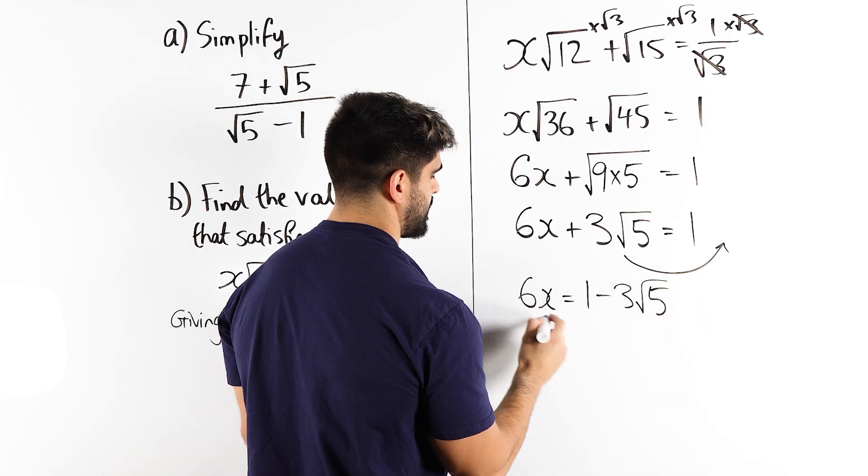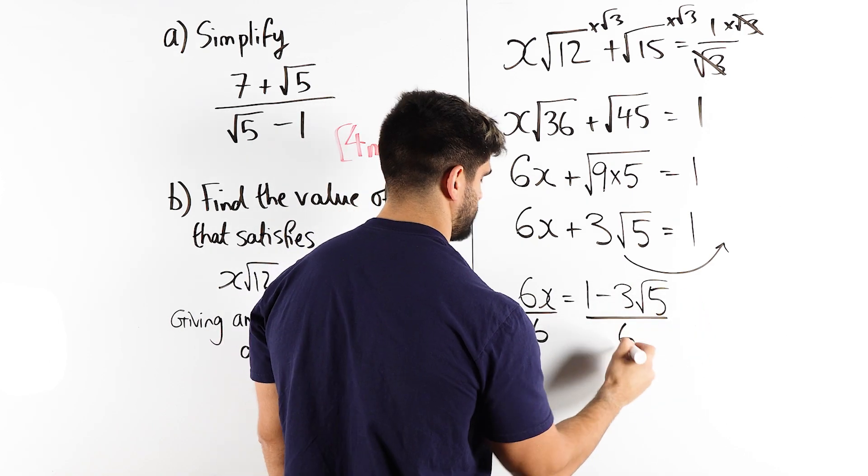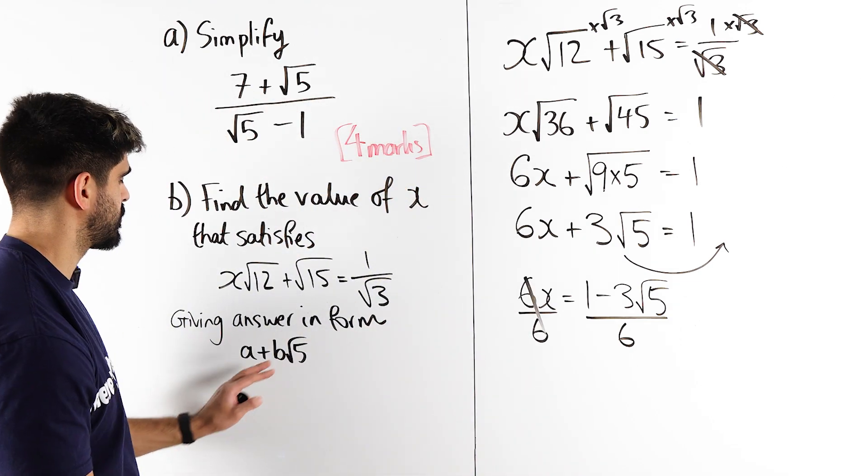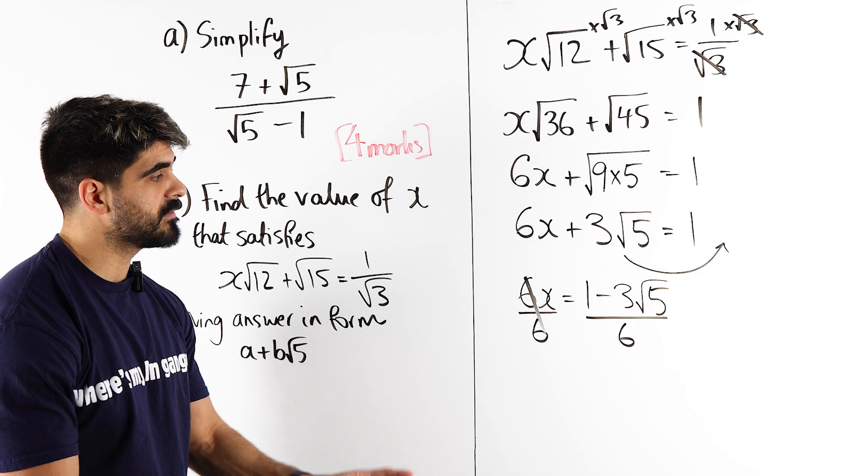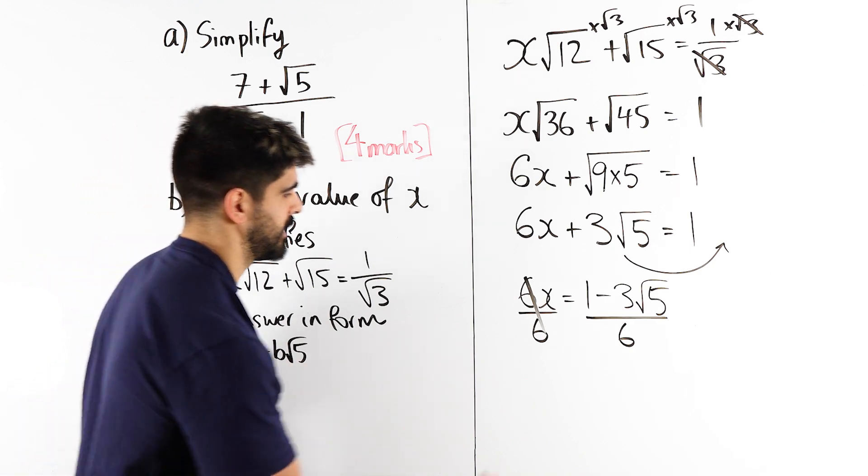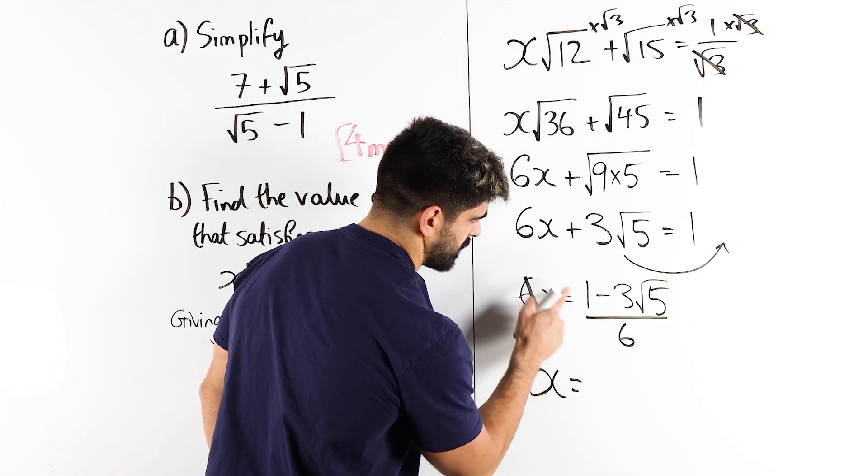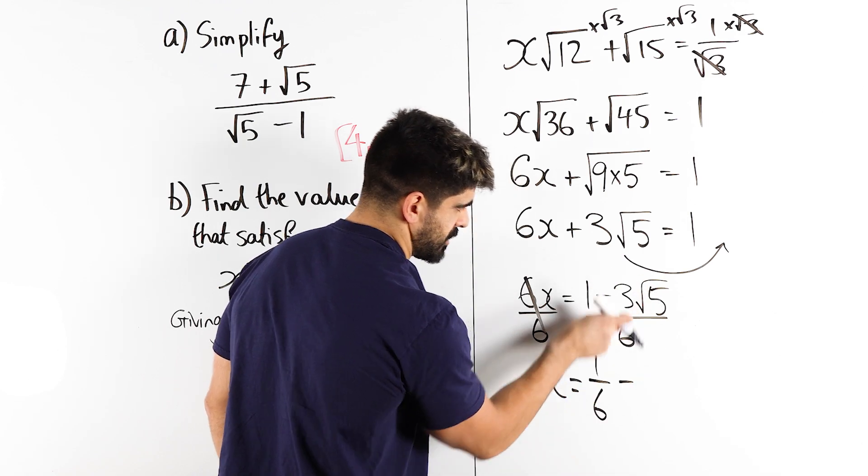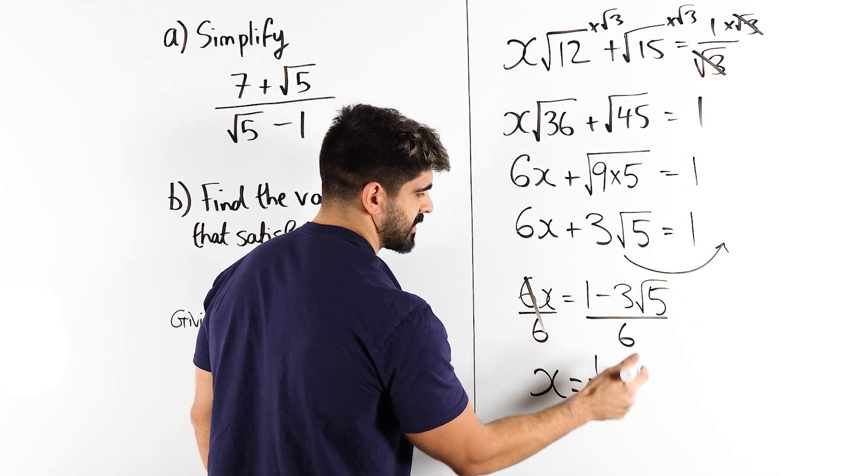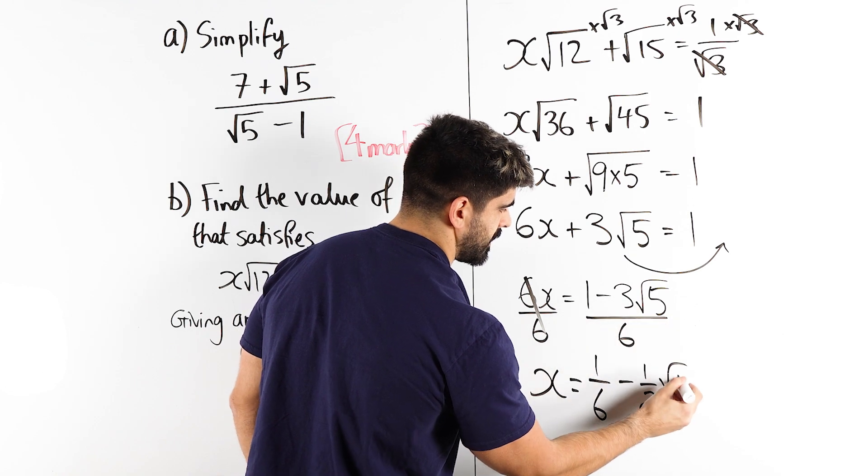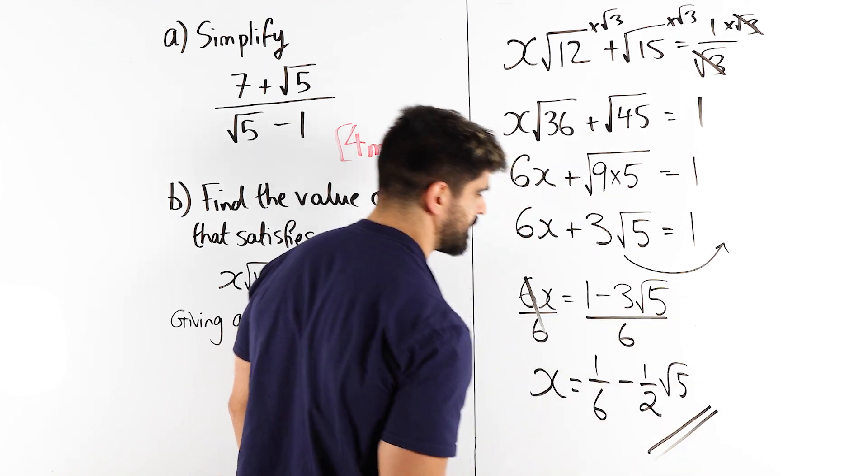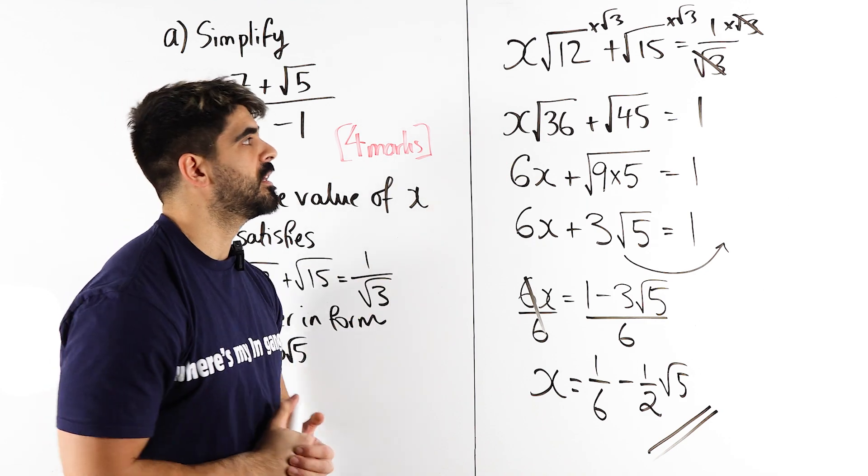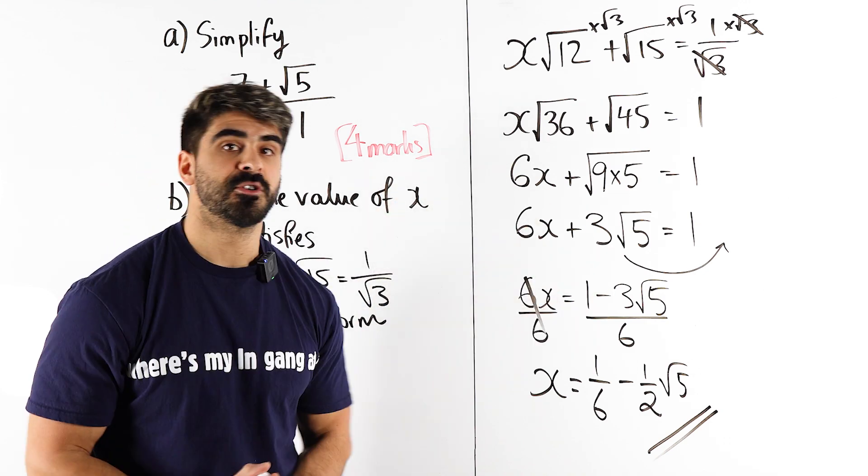So we get x is that, but take a look at the question. They say give your answer in the form a plus b root 5. What they've done is they've split the fraction. So to be careful here, we're going to write as 1 sixth minus 3 sixth. 3 divided by 6 is a half, so I'm going to say a half and then root 5. And that is my solution to that one. But there's many ways you could have done a question like this, but I think this is the most efficient way.